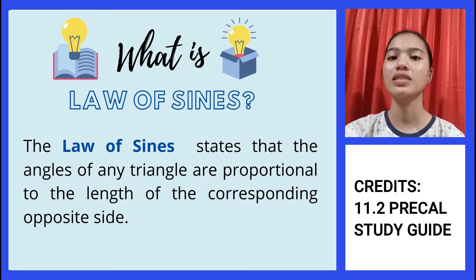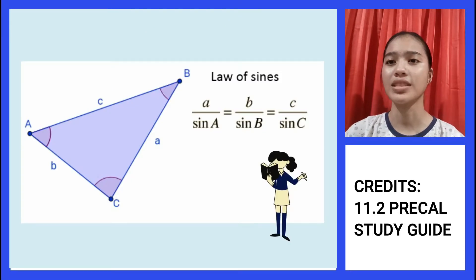The law of sines, or sine law, states that the angles of any triangle are proportional to the length of the corresponding opposite side of the given triangle. In the given example of a triangle, angle A corresponds with side a, angle B with side b, and angle C with side c.